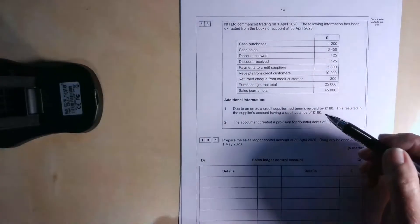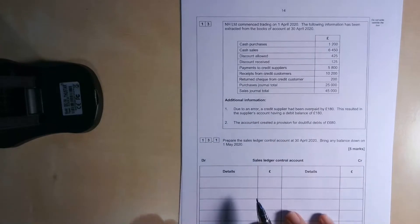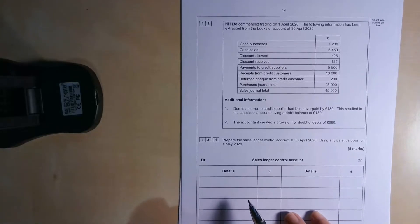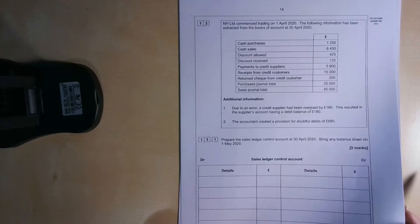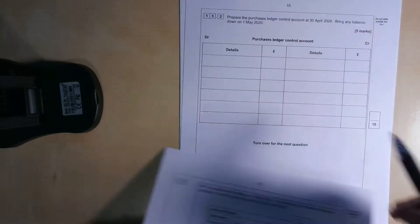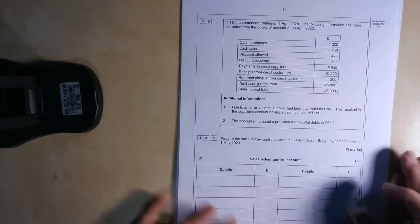So we've got a list of balances from various books of prime entry, and then we've got some additional information, an error, and some information about a provision for doubtful debts. And all we're asked to do for five marks, prepare a sales ledger control account, and for another five marks, prepare a purchase ledger control account.